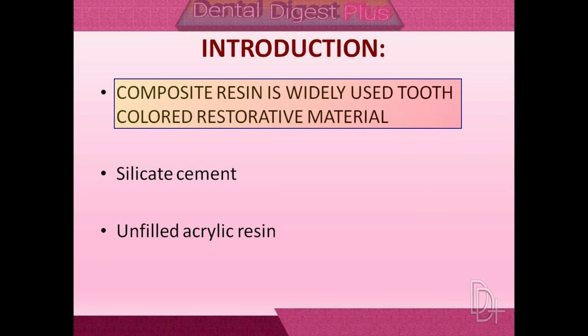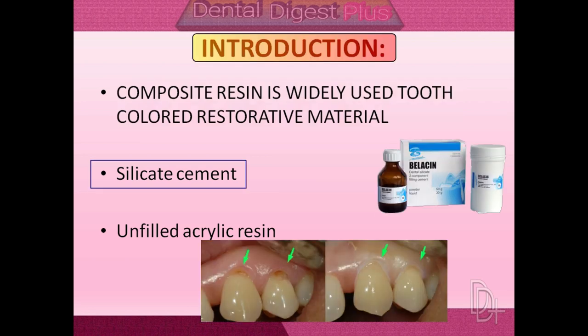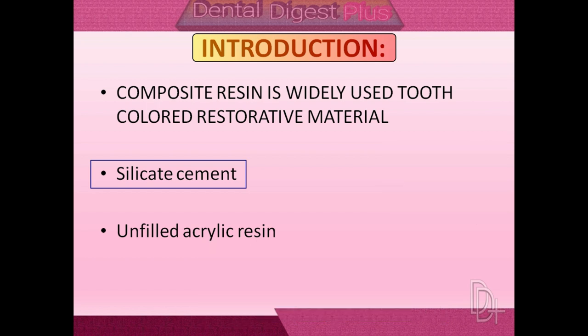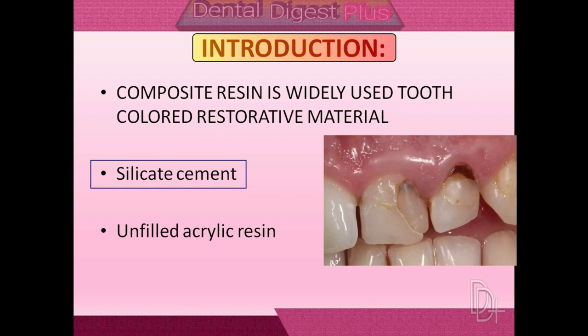During the first half of the 20th century, silicates were the only tooth-colored aesthetic restorative materials available to restore the tooth. Although silicates release fluoride which helps in preventing caries of teeth, they are no longer used to restore permanent teeth because they severely erode and discolor within a few years.